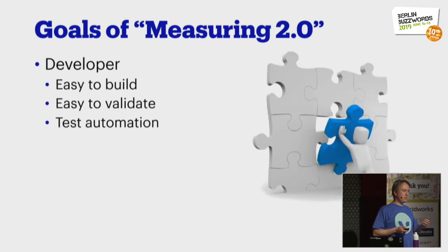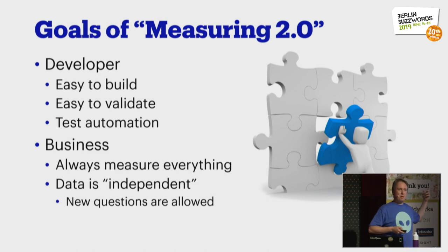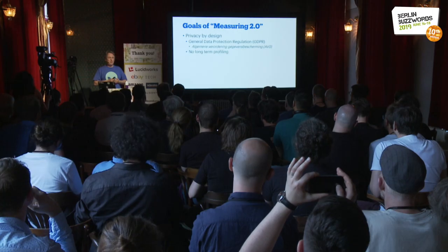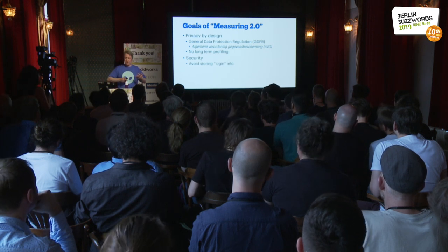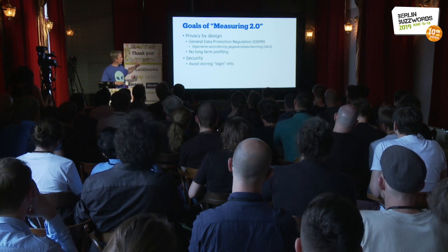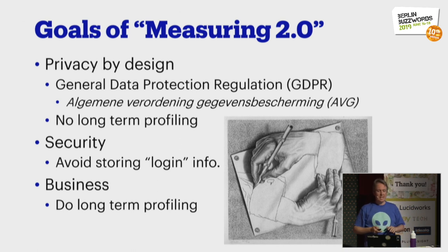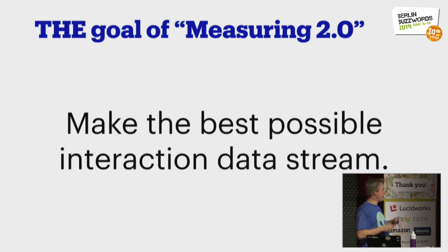We took into account the whole privacy and security discussions, which at one end says no long-term profiling, no security problems — and the business still needs long-term profiling, which is a bit of a catch. But we figured that out. Simply put, the goal is to make the best possible interaction data stream, knowing what happened on the website. And to do that, we had to make a lot of choices over the years.